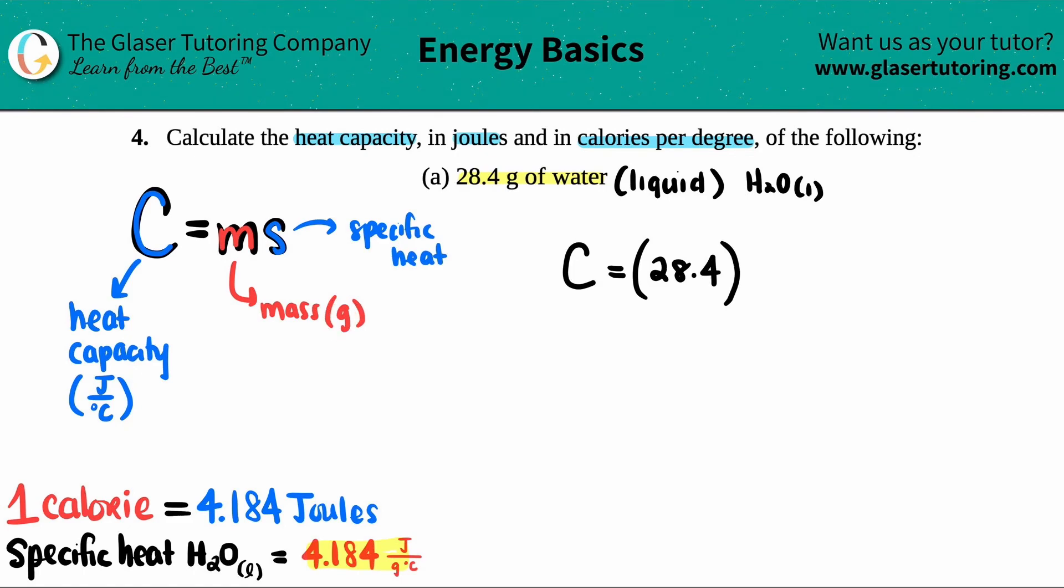I take my mass and multiply it by the specific heat of that element: 4.184. Let's calculate the heat capacity: 28.4 times 4.184.